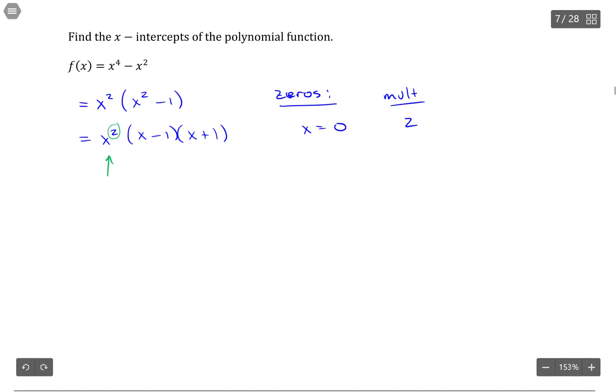And then the next zero is positive 1. Because if I take this item right here and set that to 0 and solve, I get positive 1. There's no exponent here, so it's understood to be 1. So that means the multiplicity of that zero is 1.